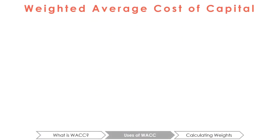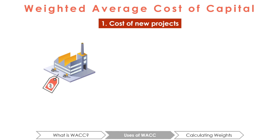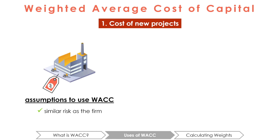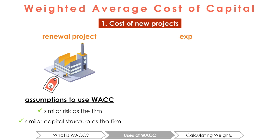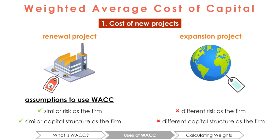You may wonder what WACC is used for. It has two common uses. One is determining the cost of capital of new projects that the company wants to undertake. To use WACC, we must assume the new project has similar risk and capital structure as the rest of the firm. For example, if the project is a renewal project financed using the available assets of the firm, we assume similar risks and capital structure. If the project is an expansion into a new field, the risks may differ, so WACC may not be appropriate or may need to be adjusted.